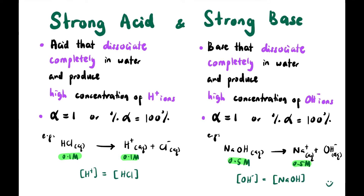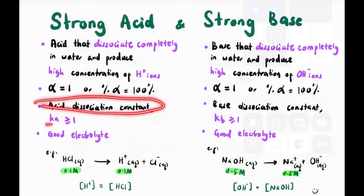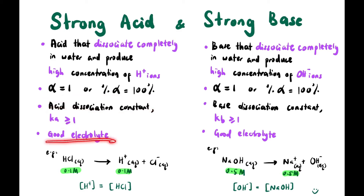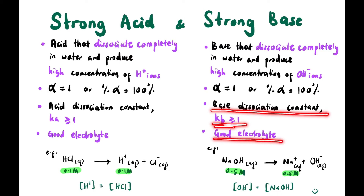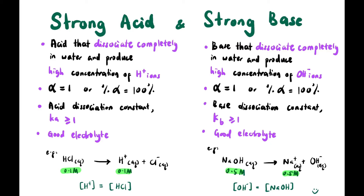We can also characterize a strong acid by its acid dissociation constant Ka ≥ 1, which shows it is a very good electrolyte. Similarly, a strong base has a base dissociation constant Kb ≥ 1, and it is also a good electrolyte.